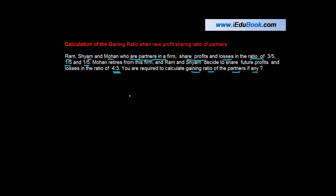So we have three partners here - Ram, Sham and Mohan. Their existing profit sharing ratio is 3/5 for Ram, 1/5 for Sham and 1/5 for Mohan.